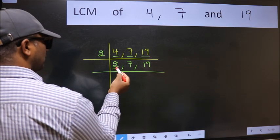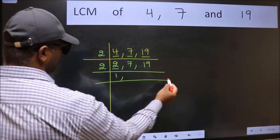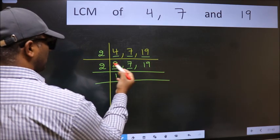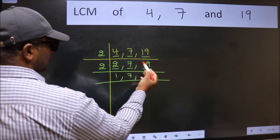Now here we have 2. 2 is a prime number so 2 once 2. The other number 7 not divisible by 2 so we write it down as it is. The other number 19 not divisible by 2 so we write it down as it is.